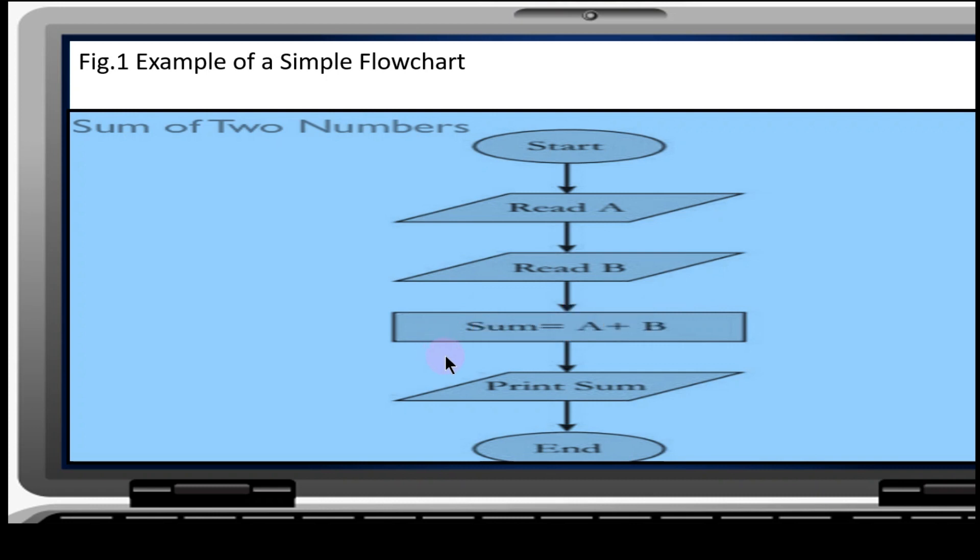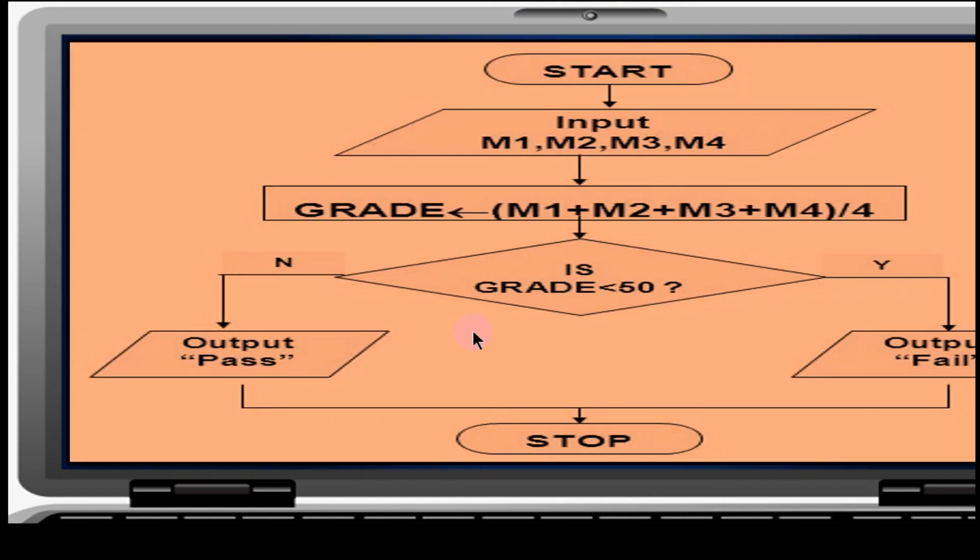Also we have here the start, input for M1, M2, M3, M4. The grade, for example your grade here in math first quarter, second quarter, third quarter, fourth quarter is 80, 80, 80, 80. Let's use here that you're going to divide it by 4, so what's the number? So your grade is... Is your grade less than 60? Why output? Did you pass or did you fail? And then your conclusion here if pass or fail.